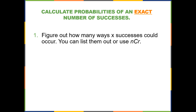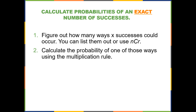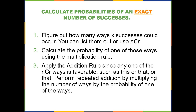First, we're going to figure out how many ways x successes could occur — you can either list them out or use the combinations formula. Then we'll calculate the probability of one of those ways using the multiplication rule. We only calculate one because every single one of those ways will have the same likelihood. Then we'll apply the addition rule, and since they're all the same probability, it's repeated addition, which we can handle much faster by using multiplication.